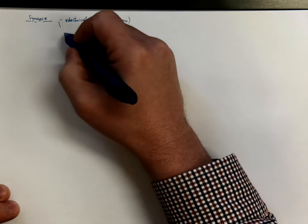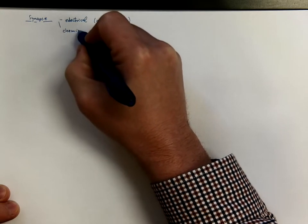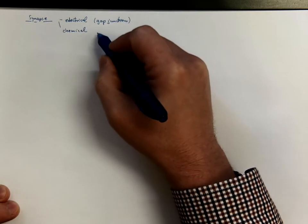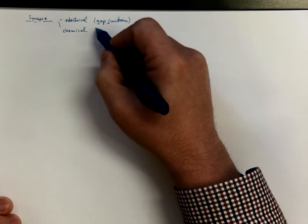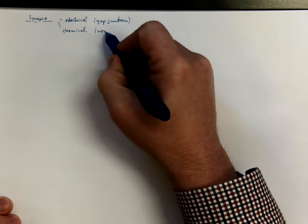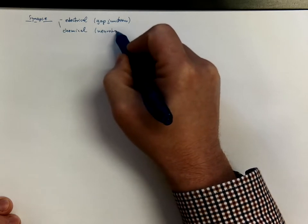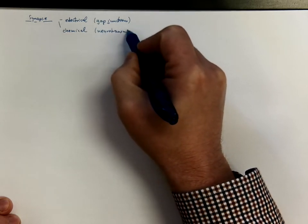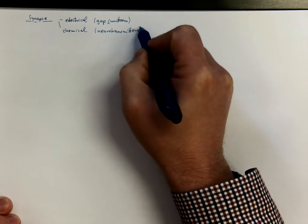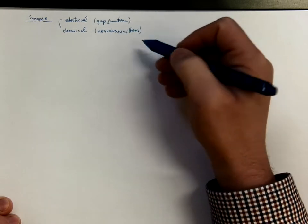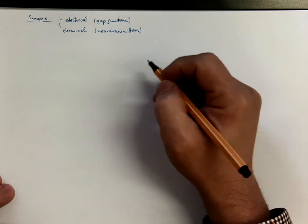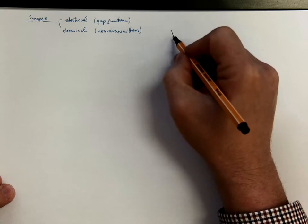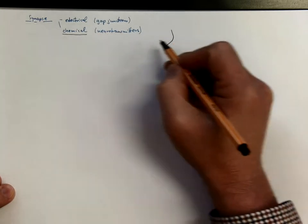Or the synapse could be on a chemical basis, where the information is carried by neurotransmitters, which are chemical molecules used for communication between neurons. Further, I will talk about the chemical synapse.